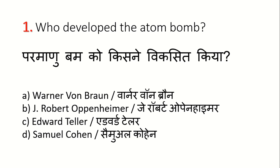The correct answer is Option B: J. Robert Oppenheimer. Physicist J. Robert Oppenheimer was the Manhattan Project's leader based in Los Alamos, New Mexico. He is called the father of the atomic bomb.